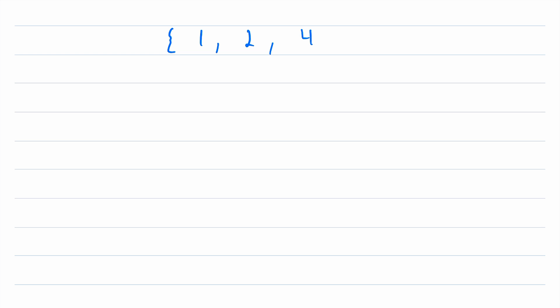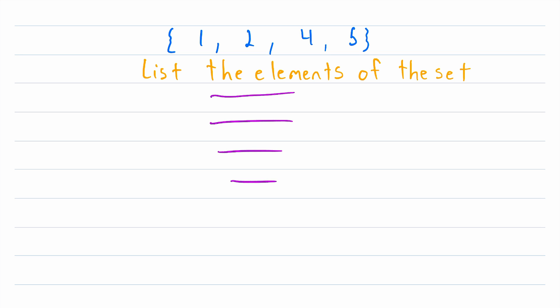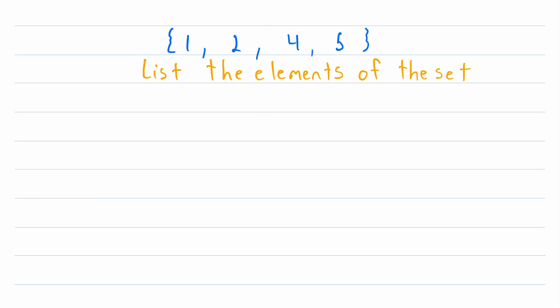We're going to begin by looking at a pretty simple example. We've got a set here, contains 1, 2, 4, and 5 — skip 3, just so it's a little trickier. And let's say that we are asked to list the elements of this set, putting each element on its own row, so we actually have to uniquely identify each of the distinct elements in the set.